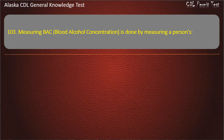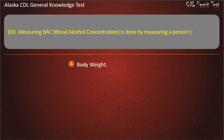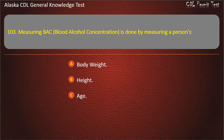Question 103. Measuring blood alcohol concentration is done by measuring a person's body weight, height, or age. Answer: Body weight.